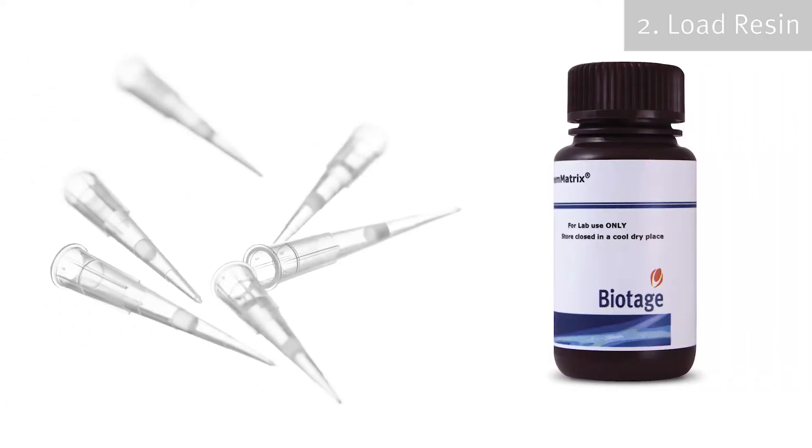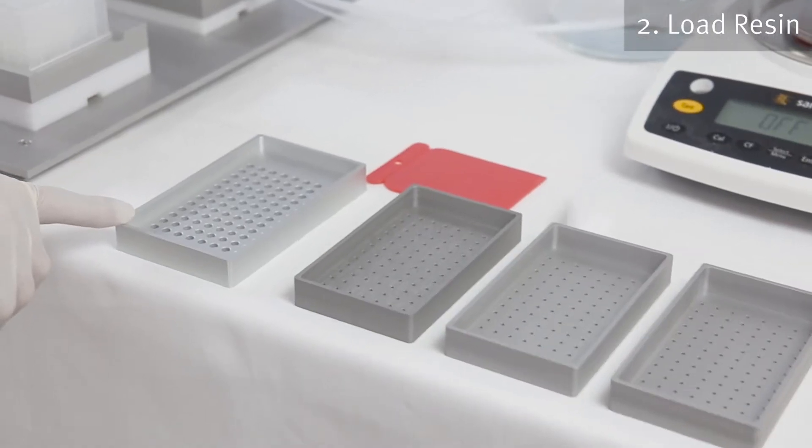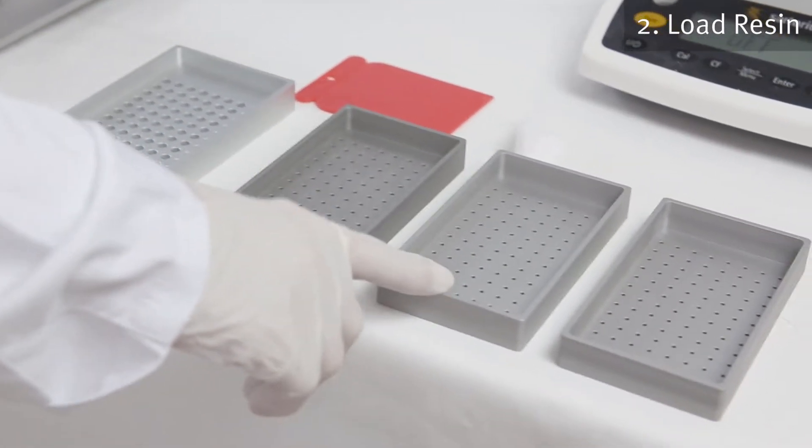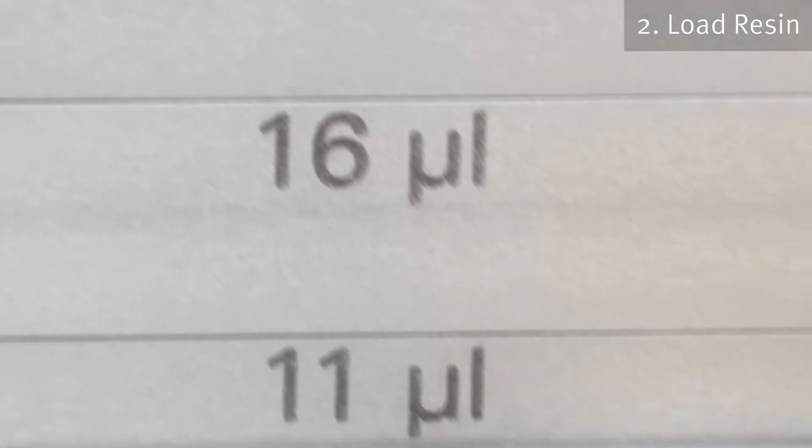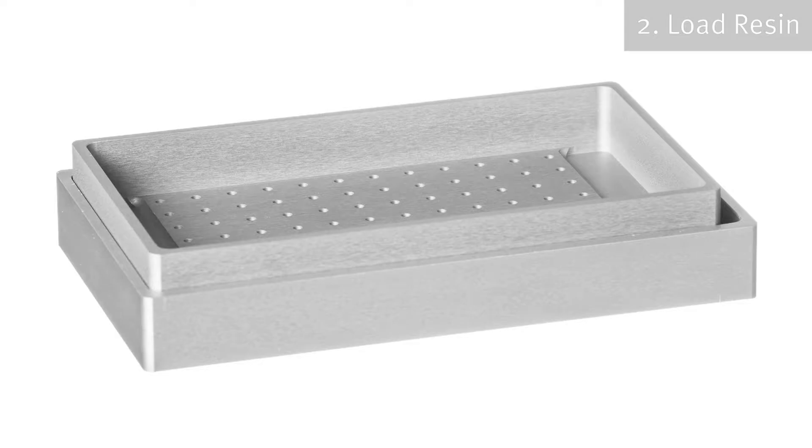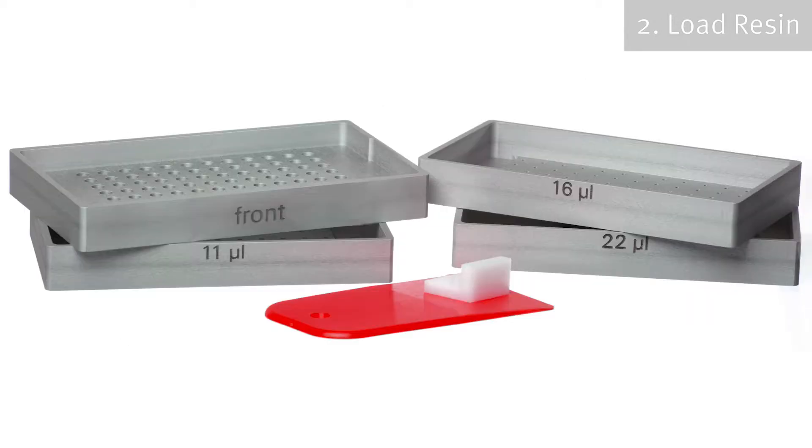The next step is to load the tip reactors with your chosen resin. This is easily performed using the resin dispenser set. The resin dispenser set consists of a base plate and three different sized measuring plates, a resin spatula, and a movement stopper. The different size measuring plates determine the quantity of resin dispensed into each tip reactor, which is also dependent on the type of resin used and the respective resin loading.